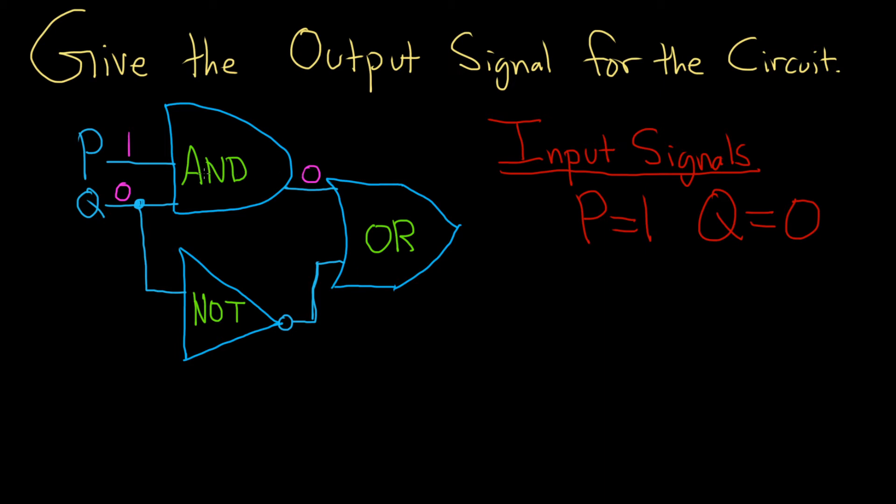The only time an AND gate will produce a 1 is if they're both 1's. And that will give you a 1. Same thing in logic, right? If P and Q are both true, then P and Q is also true. So same idea.